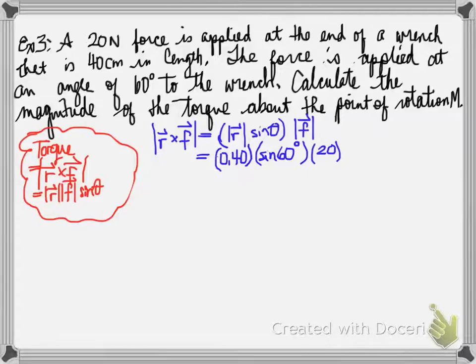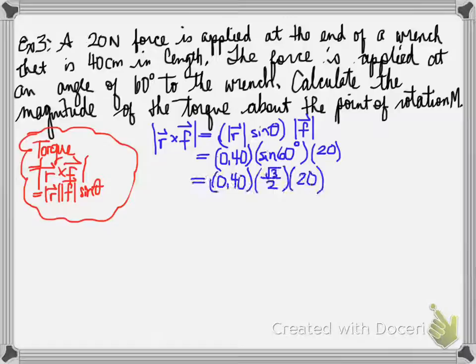0.40 is forty centimeters in meter form, sine of sixty degrees multiplied by the force, which is twenty newtons. When you calculate all of this, you find out that the answer to this is six point nine three joules.